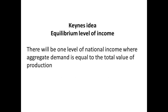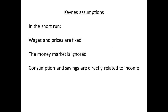The central point of Keynes is that there will be a level of national income where aggregate demand equals the total value of production. The Keynesian model makes a number of assumptions. First, and probably most important, this is a short-run model — one reason why it has been criticised. It assumes wages and prices are fixed. This means producers respond to changes in demand by changing the quantity produced, rather than by changing price.